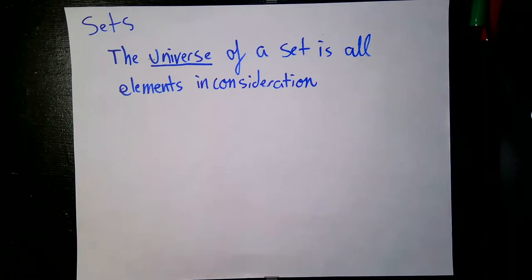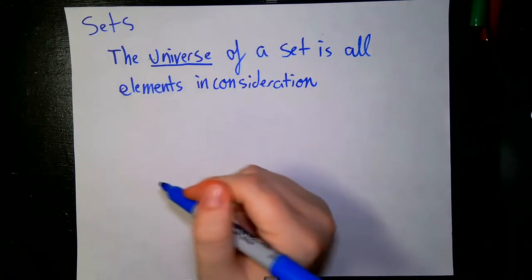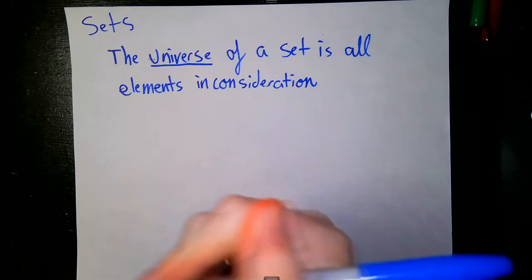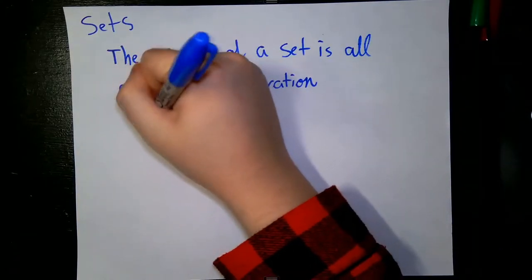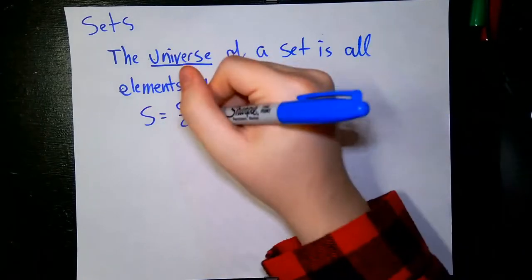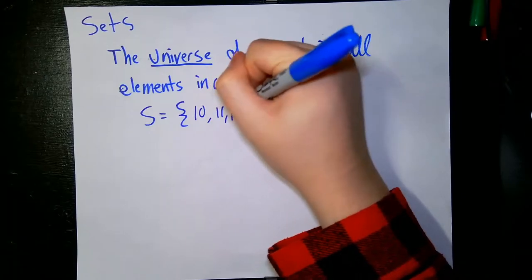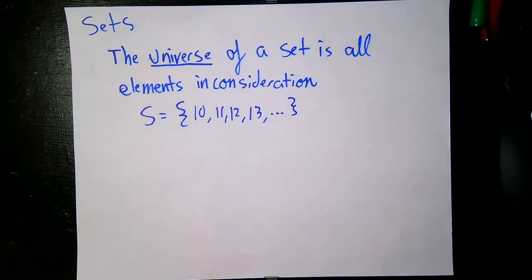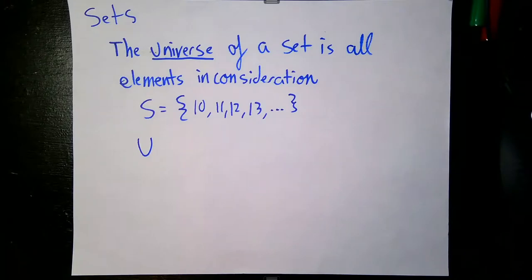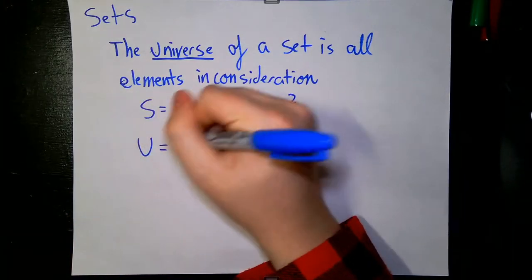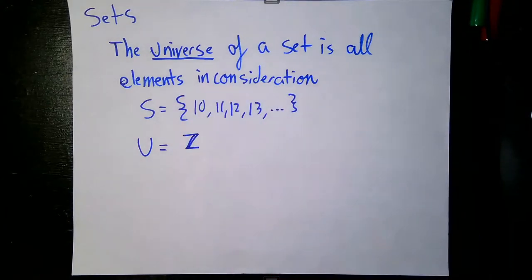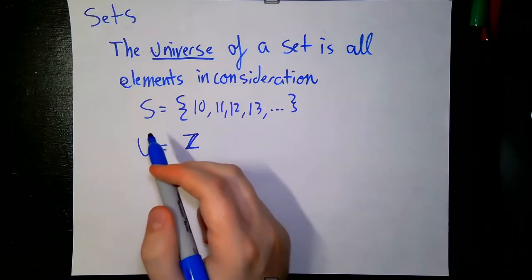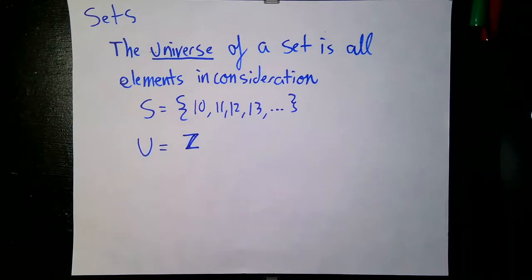The first thing I want to talk about is this definition I have written up. The universe of a set is all elements in consideration. For example, if S equals the set of all integers greater than 10 — 10, 11, 12, 13, and so on — we also have to talk about what the universe is. Since S is the set of all integers greater than 10, the universe is the set of all integers. The universe is where all the elements that are in S live, but also where the elements that aren't in S come from.